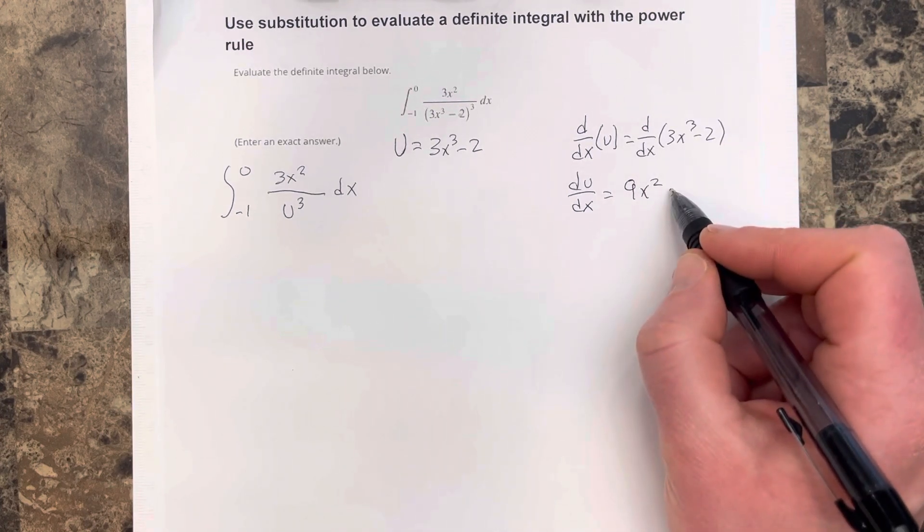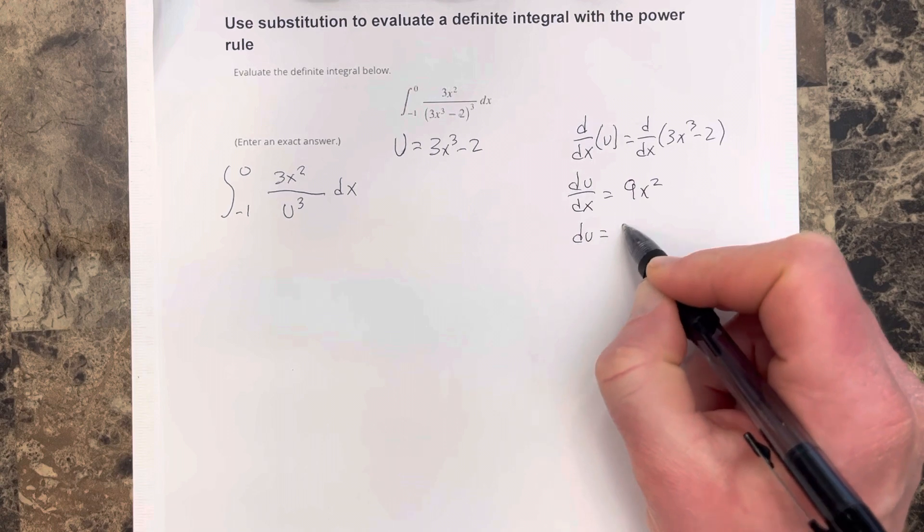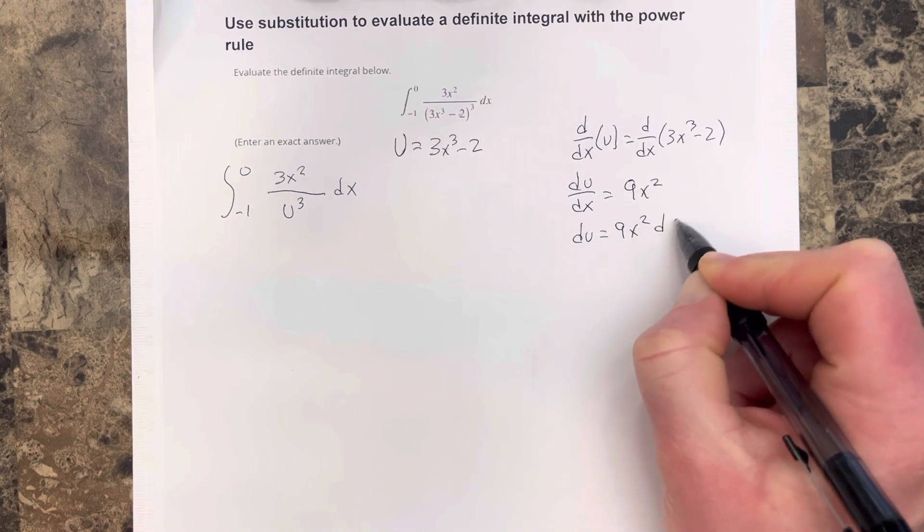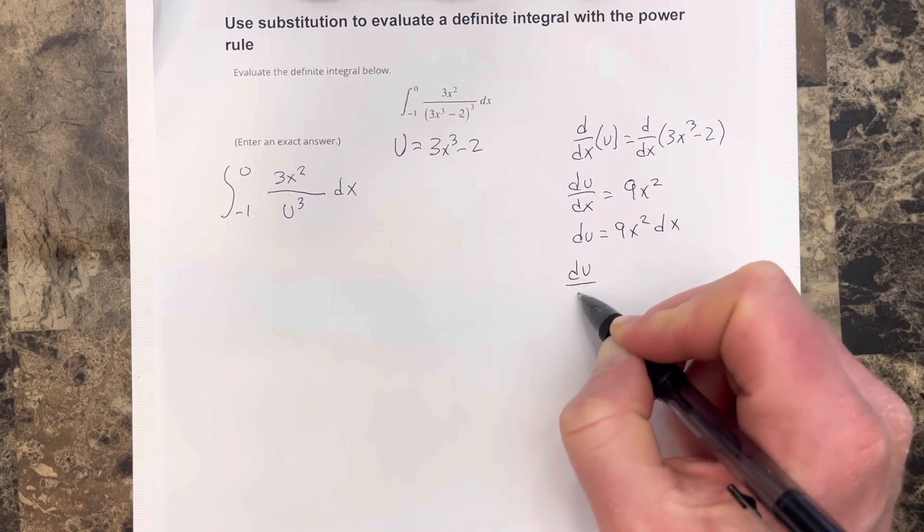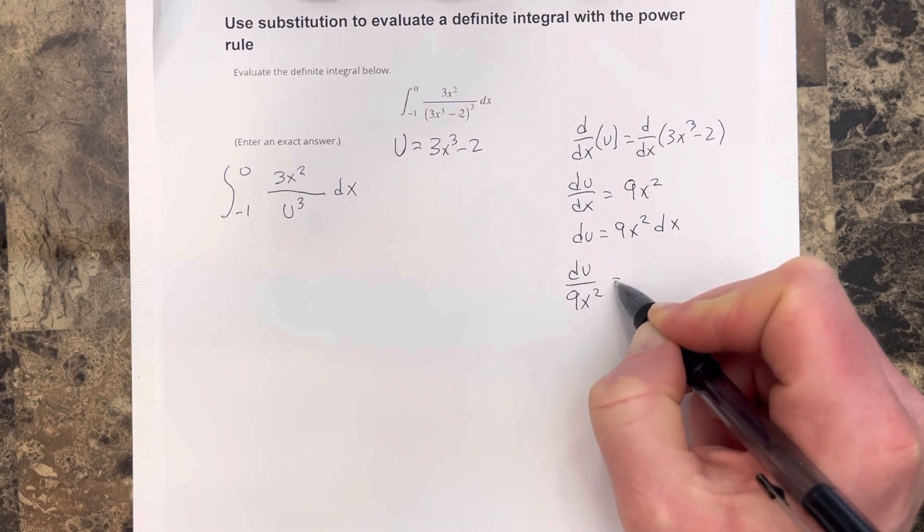Let's multiply by dx on each side, so I get du equals 9x squared dx, and then I'll divide by 9x squared on each side, so I get du over 9x squared is equal to dx.